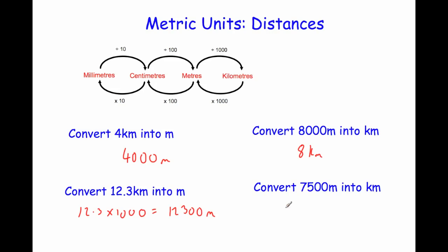Convert 7,500 meters into kilometers. We're going to divide by 1000. So 7,500 divided by 1000 — we move the digits three places to the right — giving us 7.5 kilometers.